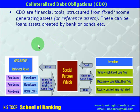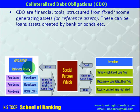There is a party called the originator who creates the fixed income generating assets, such as a bank. These assets are called reference assets. If they are loans, they may be in the form of auto loans, home loans, or any other type of loans.